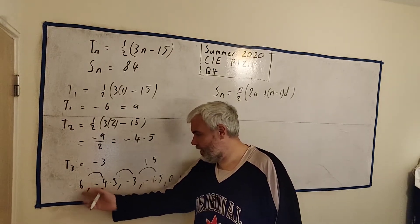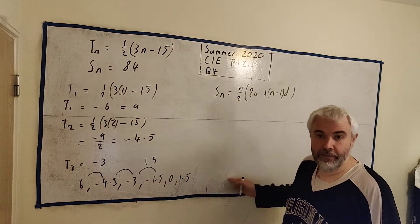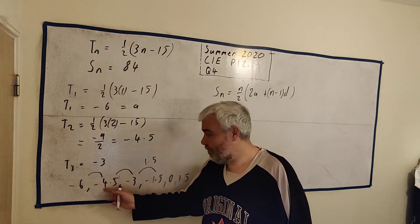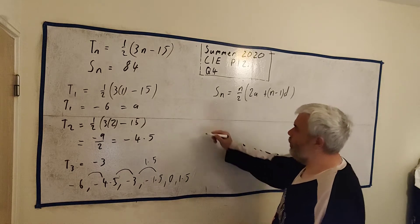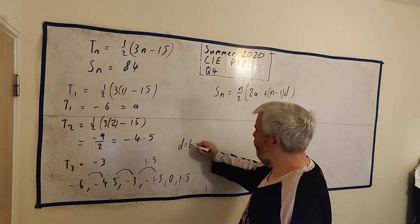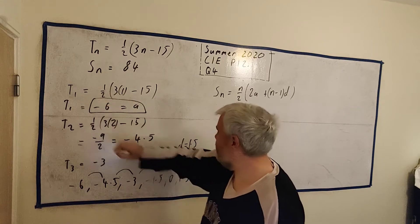Be careful about that. It looks like it's getting smaller, doesn't it? It's not. It's getting bigger every time. Minus 4.5 is bigger than minus 6. So we know D equals 1.5, and I know A equals minus 6.